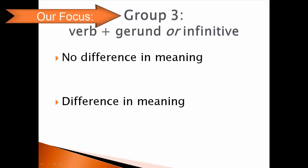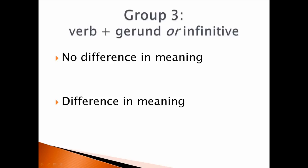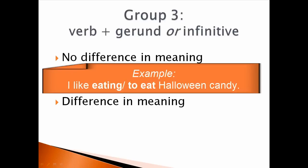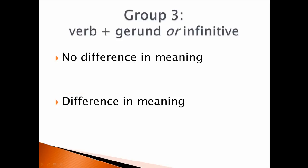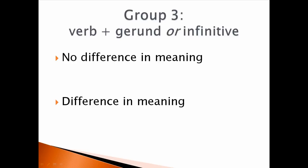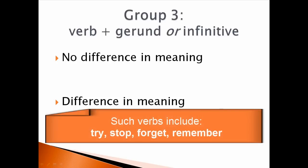In this lesson I'll give you practice with Group 3 verbs — those that can be followed by either a gerund or an infinitive. This is a special group because it breaks down further. Some of these verbs have no difference in meaning when you choose a gerund or an infinitive — for example: 'I like eating Halloween candy' / 'I like to eat Halloween candy.' But with other verbs there is a difference, and you have to choose carefully. Right now we're going to study the changes in meaning with try, stop, forget, and remember.